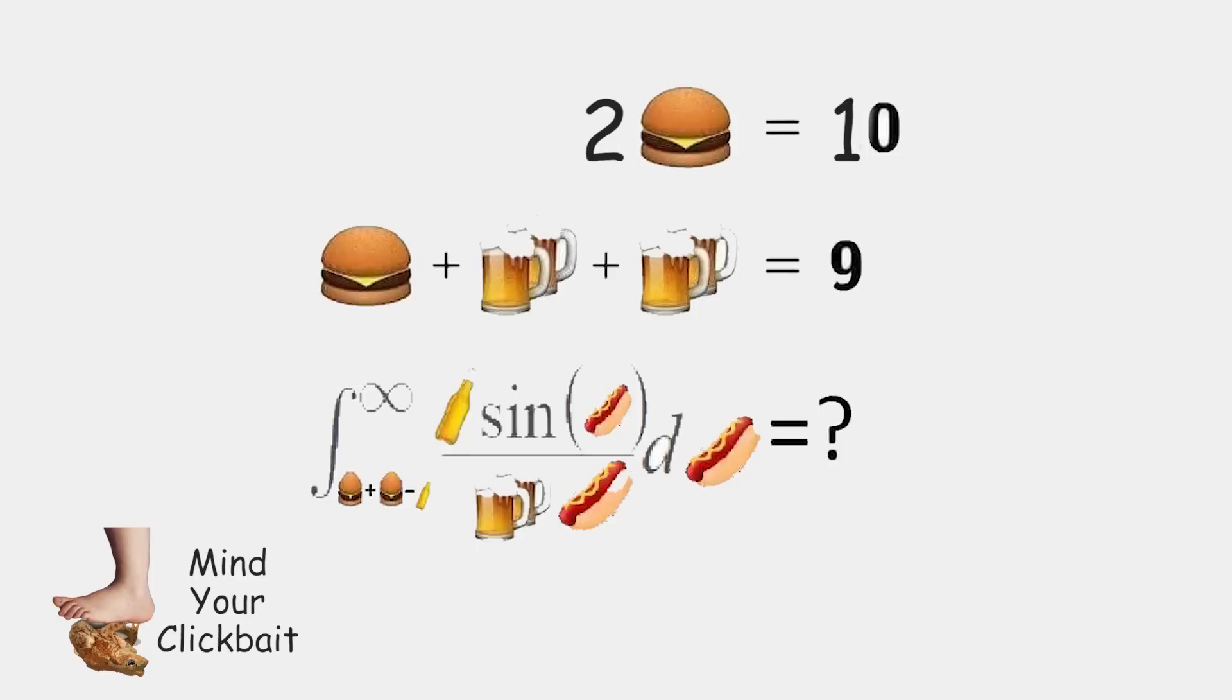And we get that 2 hamburgers are equal to 10. Now we can divide both sides by the 2, that's in composition with the burger, to get a value for our burgers to be equal to 5.